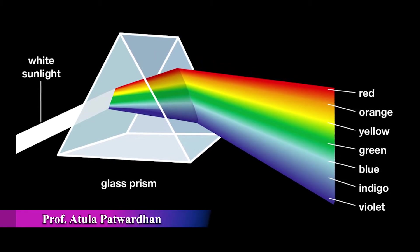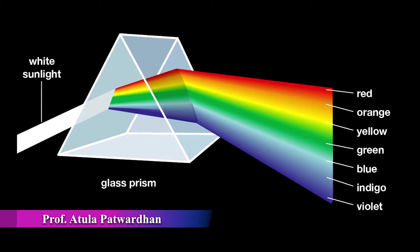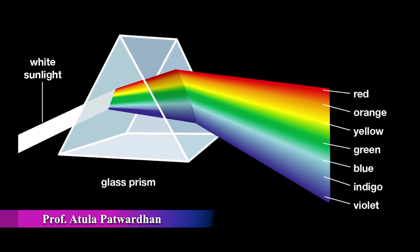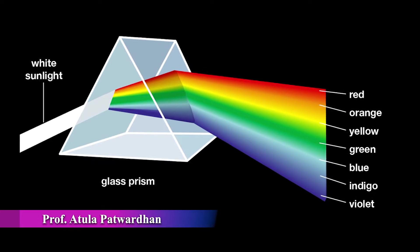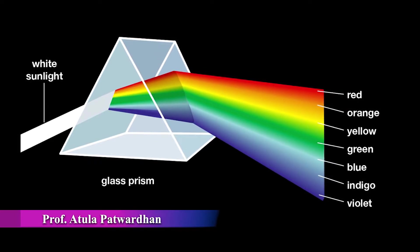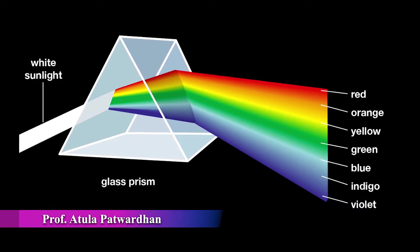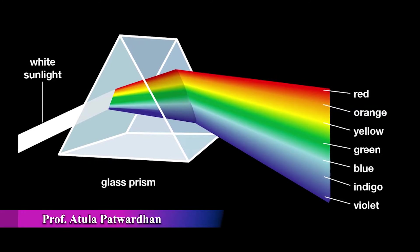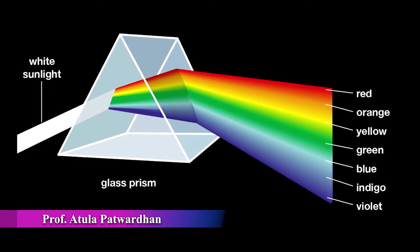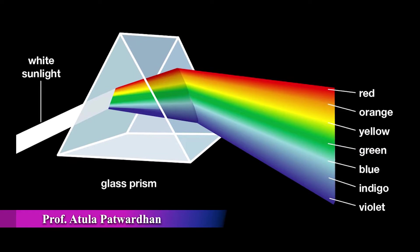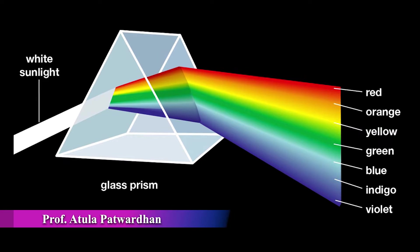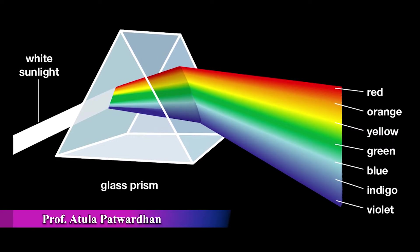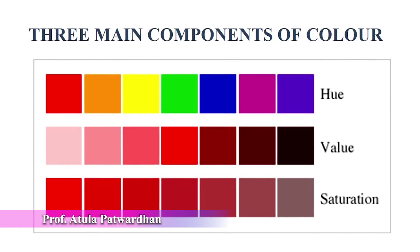We can perceive color in the presence of light only. Where there is no light, there is no color. When we say we get a certain color sensation from an object, some of the light is absorbed by the object body and the remainder is reflected and perceived as body color. The hue depends on the type of light.